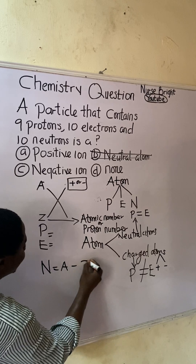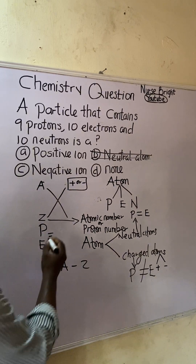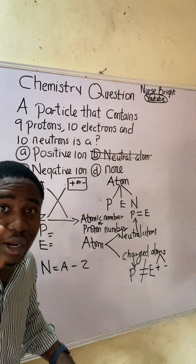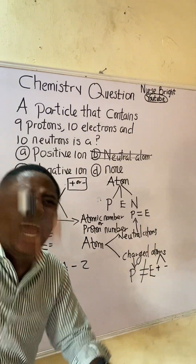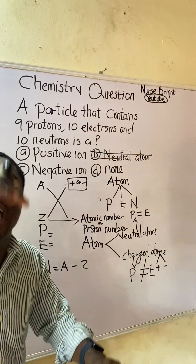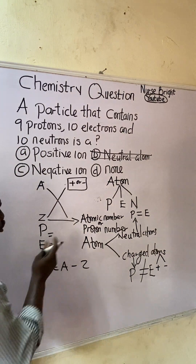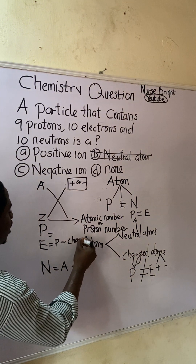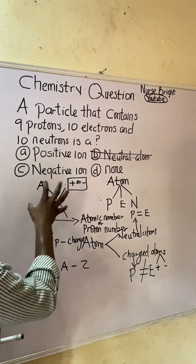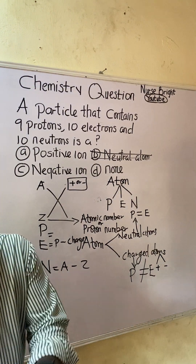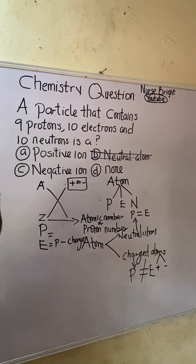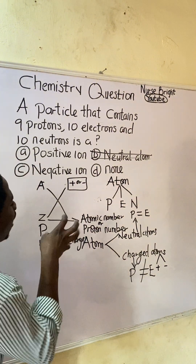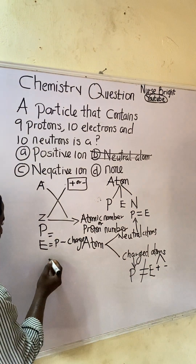Neutron number is simply A minus Z — what is up minus what is down. But how do we get the electron number? The electron number is solved using the formula: electron number equals proton number minus charge. We know the atom has a charge, but we don't know if it is positive or negative, which is why we use this formula.